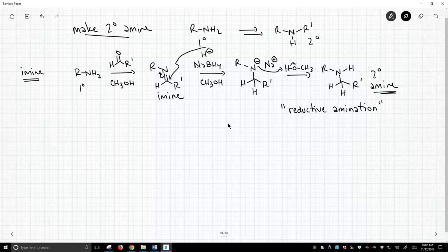The reductive amination involves taking this primary amine, making the imine, and then reducing it with sodium borohydride. What's the other way?